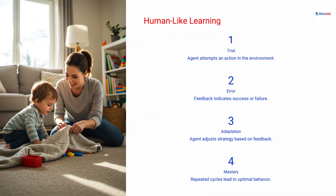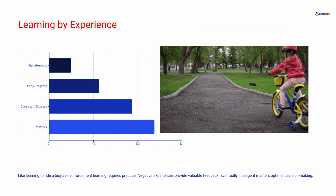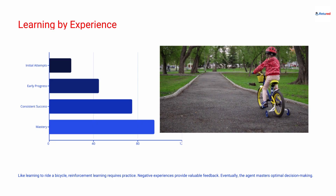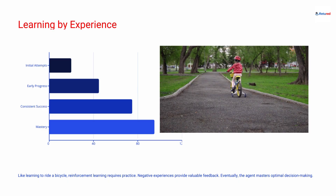Conceptually, reinforcement learning mirrors human learning. Just like in the hot or cold game we played as children, an RL agent adjusts its actions based on past rewards, repeating behaviors that lead to success and avoiding those that don't. To sum up, reinforcement learning is fundamentally about learning through experience. Think of it like learning to ride a bicycle — you stumble, get skinned knees — negative rewards — but eventually master the balance and enjoy the ride — positive rewards.